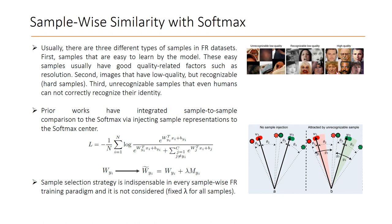Three types of samples are present in face recognition datasets. First, samples that are easy to learn by the model. Second, low-quality but recognizable samples. Third, unrecognizable instances.